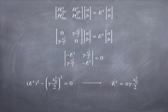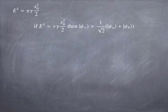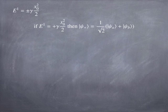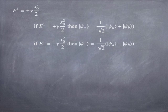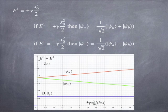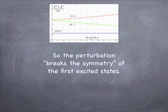We now have two eigenvalues. Plugging E1 = +γx₀²/2 back in, we find A = B, giving the solution ψ₊ = ψ_A + ψ_B. Plugging in E1 = −γx₀²/2 gives A = −B, so ψ₋ = ψ_A − ψ_B. Graphing energy versus γ, ψ₊ goes up in energy and ψ₋ goes down. The perturbation breaks the degeneracy of the excited states |1,0⟩ and |0,1⟩, splitting them into two states with different energies.